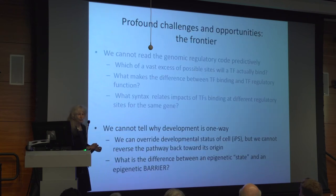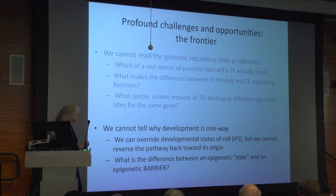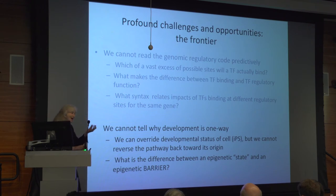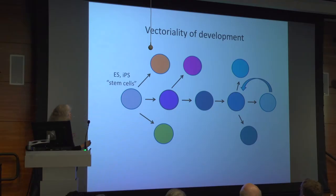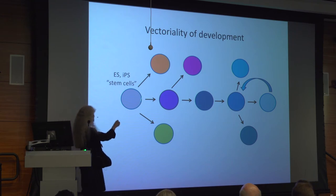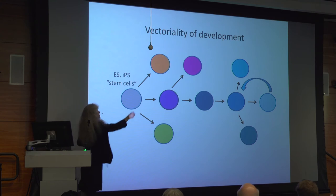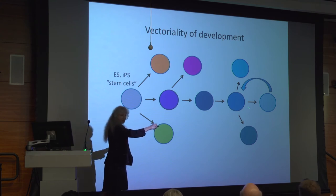The final point I want to make is we can't tell why development is one-directional. We can override it by dumping in large groups of transcription factors as we do in reprogramming, but we can't actually make it go backwards. What's the barrier? All of the individual component reactions biochemically should be reversible — but they aren't. Development is vectorial. Say you want to get a cell back to its precursor state — we can only do it by making it go all the way back to being an IPS cell and then differentiating it back out again.